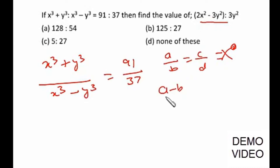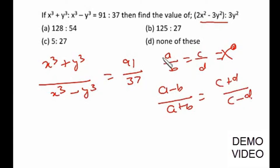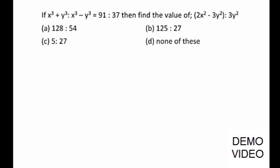...if A/B = C/D then (A − B)/(A + B) = (C − D)/(C + D), and equivalently (A + B)/(A − B) = (C + D)/(C − D). Here we have X³ + Y³ upon X³ − Y³ is given as 91:37, and we have to find out the value of an expression using this componendo and dividendo property.